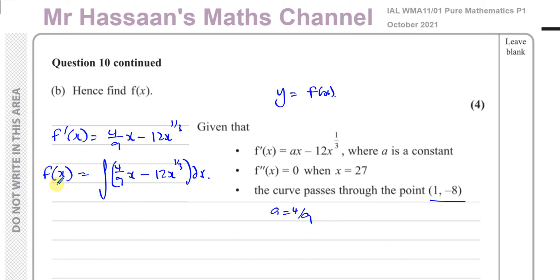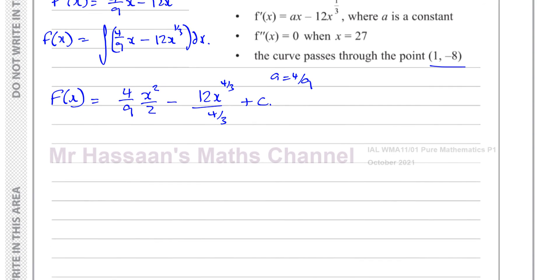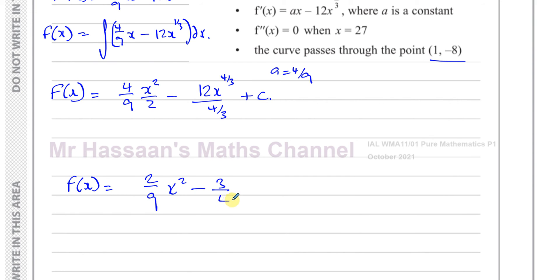Integrating: add one to the power and divide by the new power. For the first term: 4 over 9 times x squared divided by 2. For the second term: 12x — adding one to the power of a third gives 4 over 3, so we divide by 4 over 3, giving plus c. Simplifying: 4 over 9 divided by 2 gives 2 over 9 x squared. Dividing by a fraction means multiplying by its reciprocal, so 3 over 4 times 12 gives 9. So we get f(x) = 2 over 9 x squared minus 9x to the power 4 over 3 plus c.